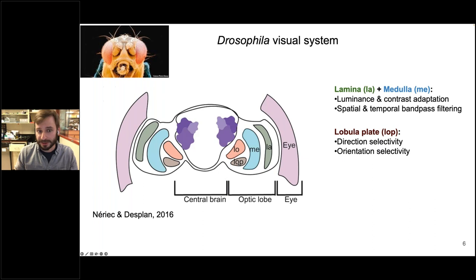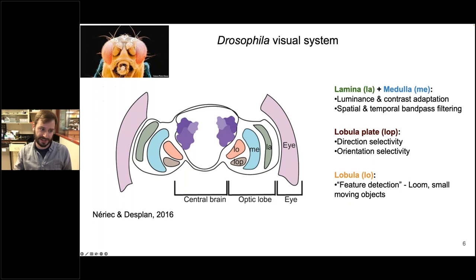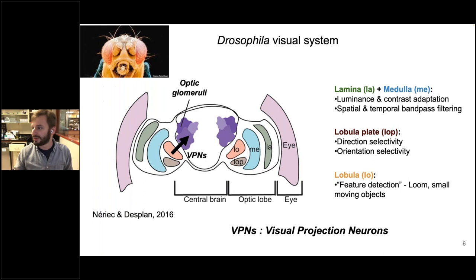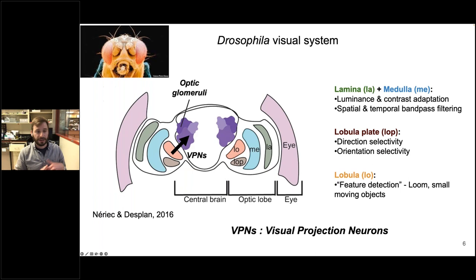From there, information goes to the lobula plate — this brown neuropil in the optic lobe — where features like direction selectivity and orientation selectivity first appear. There's also a neuropil called the lobula, which will be the focus of my talk today. This is where visual feature detection happens — neurons here are responsible for things like visual looming and small moving objects. Of particular importance, there's a collection of neurons in the lobula called visual projection neurons, or VPNs, which project from the lobula to small structures in the central brain called optic glomeruli.